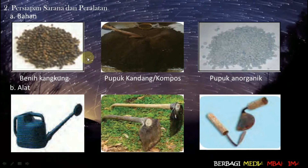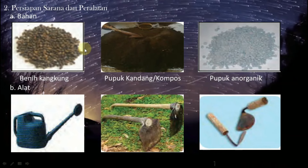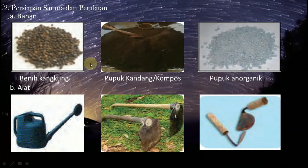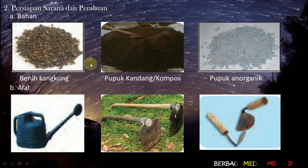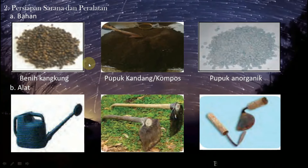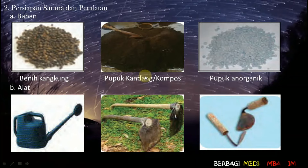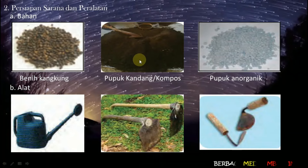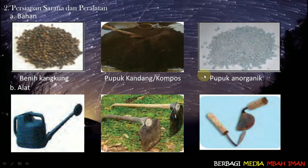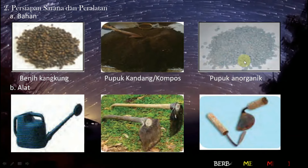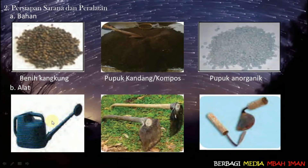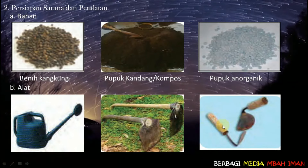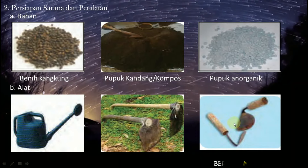Persiapan sarana dan peralatan: bahan contohnya untuk budidaya tanaman kangkung disiapkan benih kangkung. Sebelum disemai, benih kangkung dipanaskan agar mudah tumbuh. Kemudian pupuk kandang atau pupuk kompos, media tanah serta sekam, dan pupuk anorganik jika dibutuhkan. Alat berupa gembor untuk penyiraman, cangkul untuk pengolahan tanah, dan koret jika dibutuhkan di kebun.